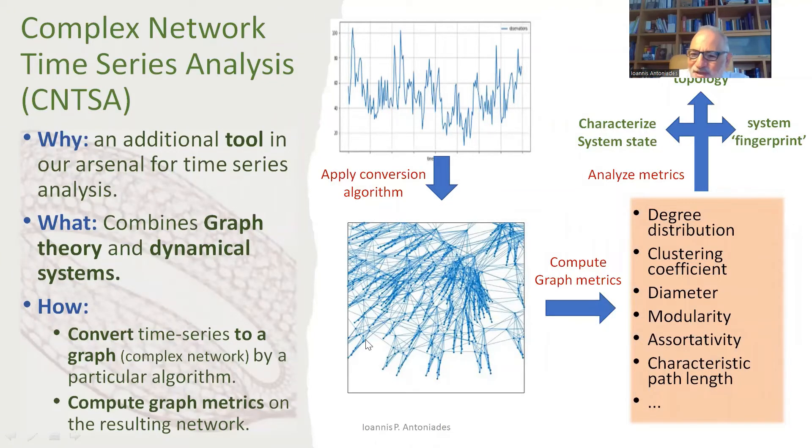So starting from a time series, you apply the algorithm, you get a graph. And then you can compute graph metrics, like the degree, the clustering coefficient, the diameter, modularity, and so on. Well-known graph metrics. And then from looking at and analyzing the graph metrics, you can answer questions about the time series in the underlying system. What is the topology? Is it fractal? Is it periodic? And so on.